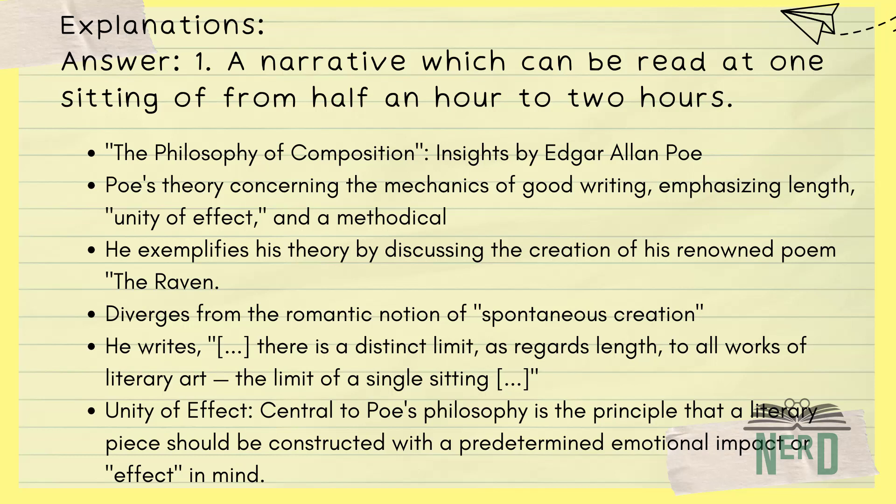Poe wasn't just making stuff up on the fly. He had a formula, a recipe for writing that he swore by — like he was cooking up stories with the precision of a chef. The key ingredients: keep it short, make it punchy, and everything from the creepy settings to the last word should leave you feeling some type of way. And yes, he had a thing for the theme of a beautiful woman's death — dark, but it was his go-to for maximum emotional impact.